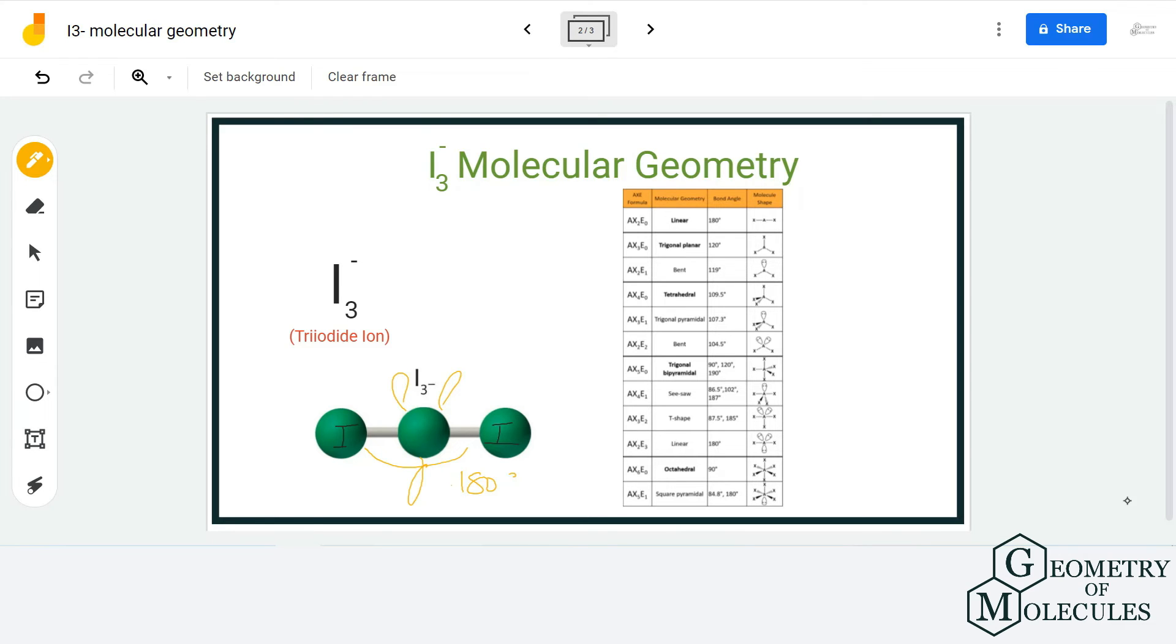And hence it will take this type of shape, and you can make out from this structure that it is a linear molecule. Even if you use the AXE notation, you will get that this is a linear molecule.